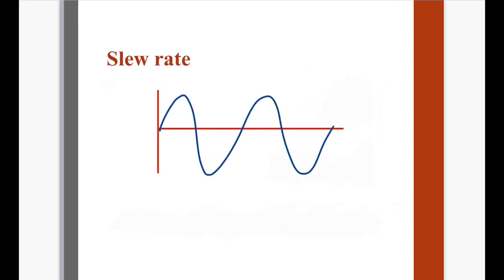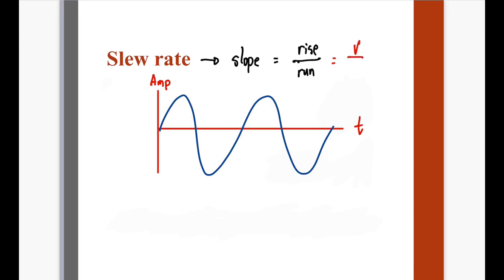The fourth property is slew rate. Kapag sinabi natin yung slew rate, pwede natin itong i-classify as slope — it is the rise per unit run. Meron tayong waveform dito: yung vertical axis is the amplitude or voltage, then yung horizontal axis is the time. So technically, ang unit niyan is volts per unit time or seconds. But usually, mataas na voltage over maliit na time or microseconds — usually nasa microseconds ang scale ng time dito. Meron tayong upper limit ng slope response ng isang op-amp.